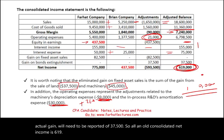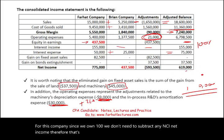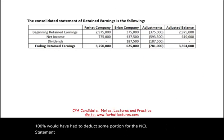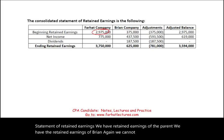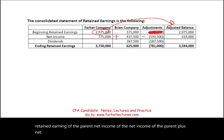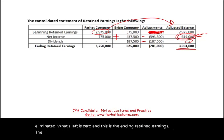Since Farhat owns 100% of Brian, there is no NCI deduction needed — consolidated net income is $619,000. On the statement of retained earnings, Brian's retained earnings are fully eliminated. The parent's retained earnings plus consolidated net income of $619,000, minus dividends (100% eliminated), gives the consolidated ending retained earnings.